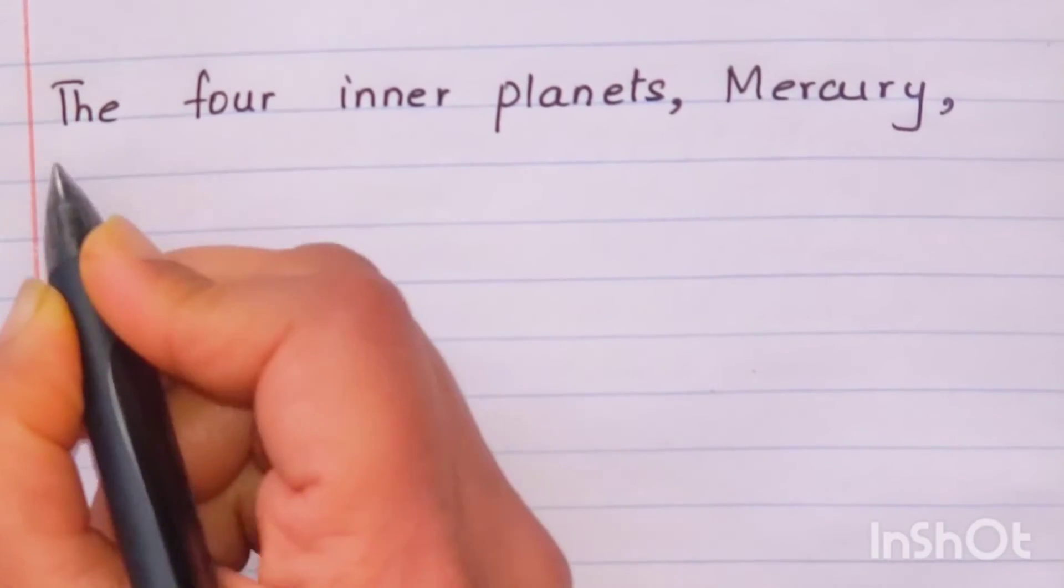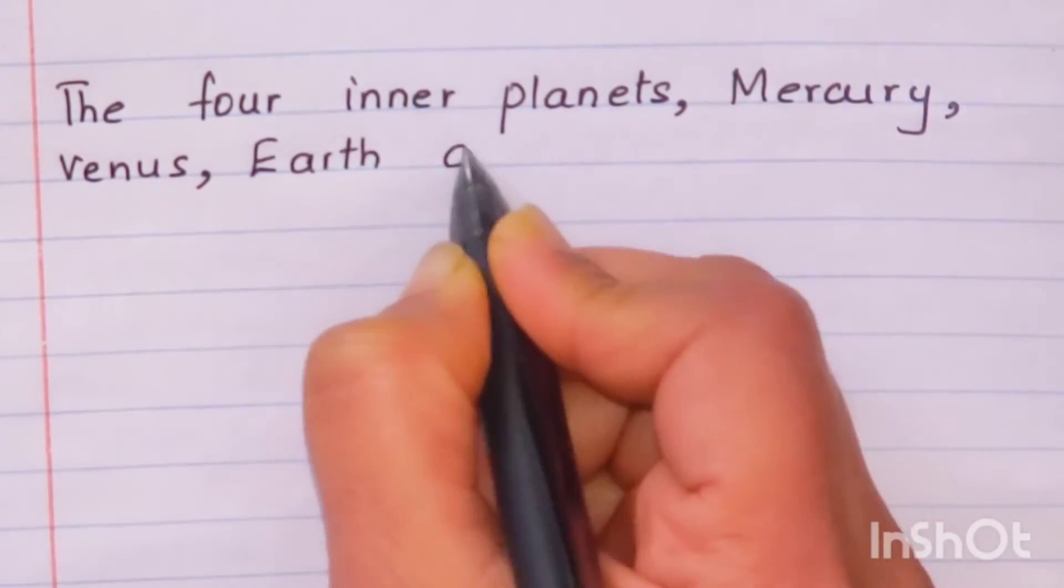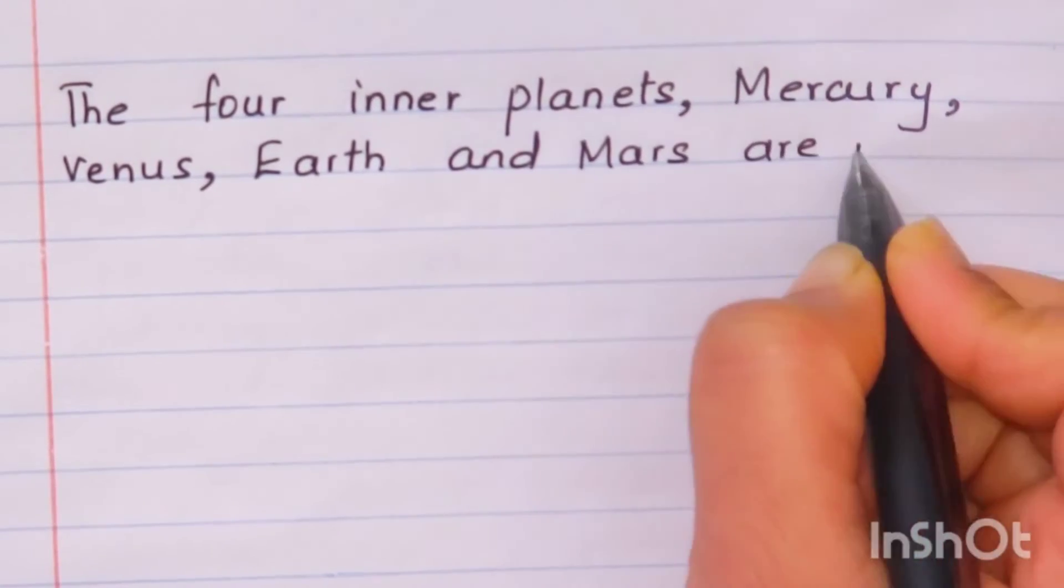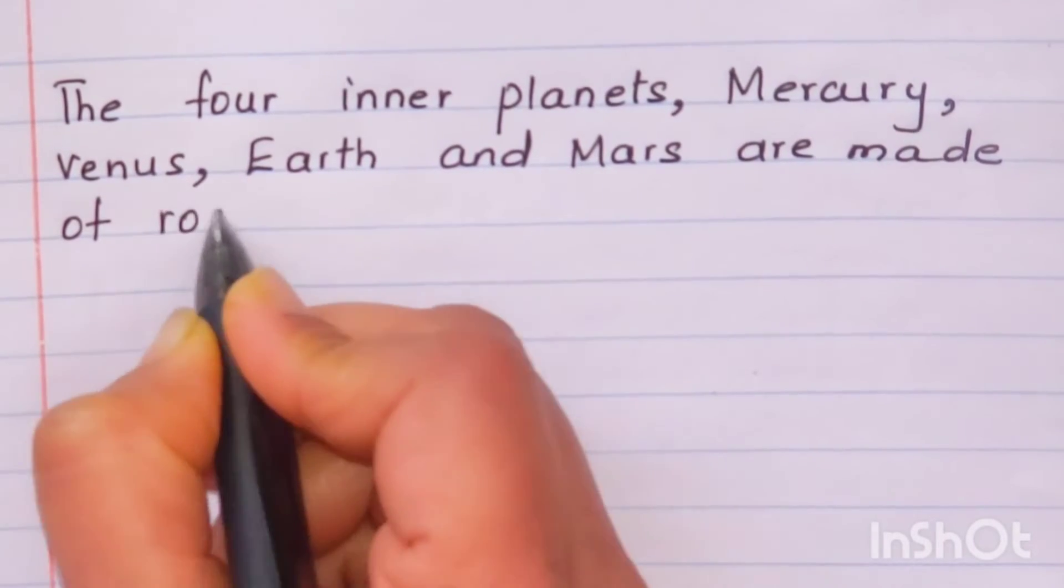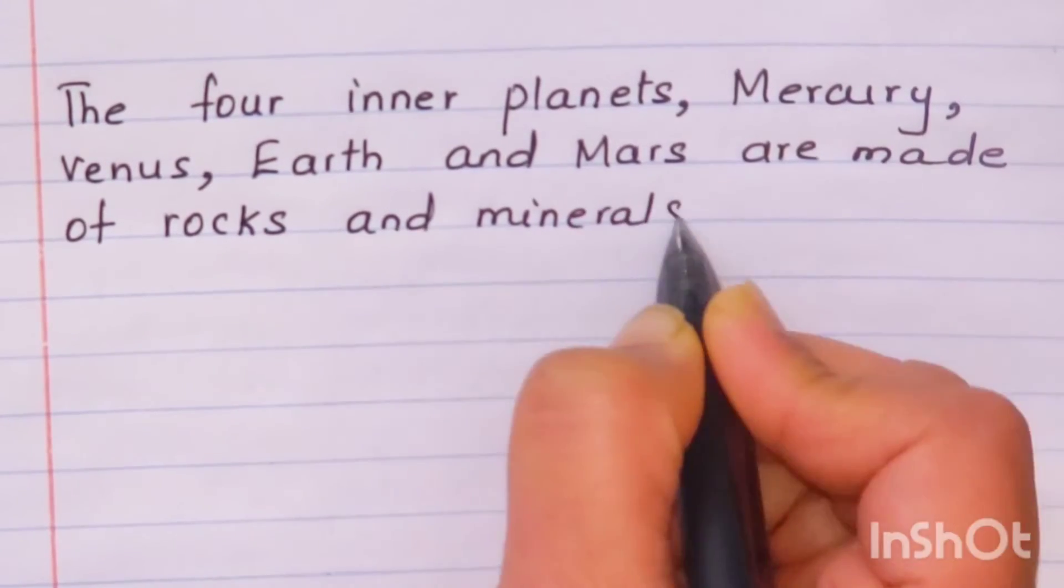The four inner planets include Mercury, Venus, Earth and Mars and are made up of rocks and minerals.